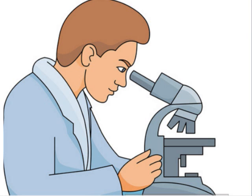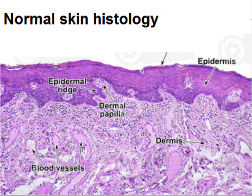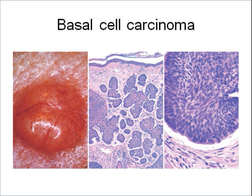For comparison, this is the normal skin showing epidermis and dermis. The dermis contains connective tissue and blood vessels, and there are dermal papillae and epidermal ridges. But in the case of basal cell carcinoma, you can find tumor nests in the dermis covered by epidermis. These are basal-type cells because basal cell carcinoma arises from the basal layer of the epidermis.